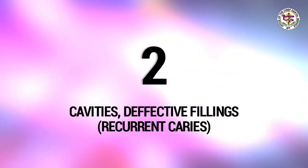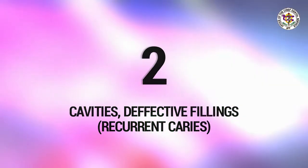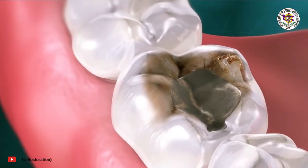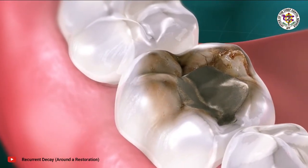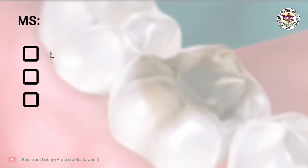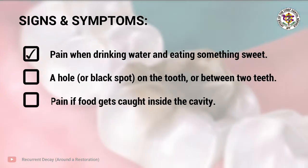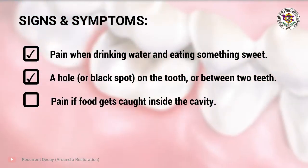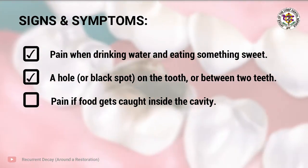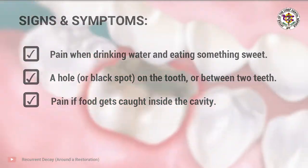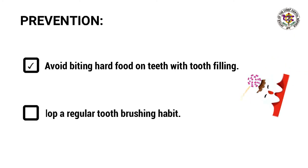Two: cavities and defective fillings, also called recurrent caries. A cavity can also start around an old filling, especially if it is dirty. Signs and symptoms include pain when drinking water and eating something sweet, a hole or black spot on the tooth or between two teeth, and pain when food gets caught inside the cavity.